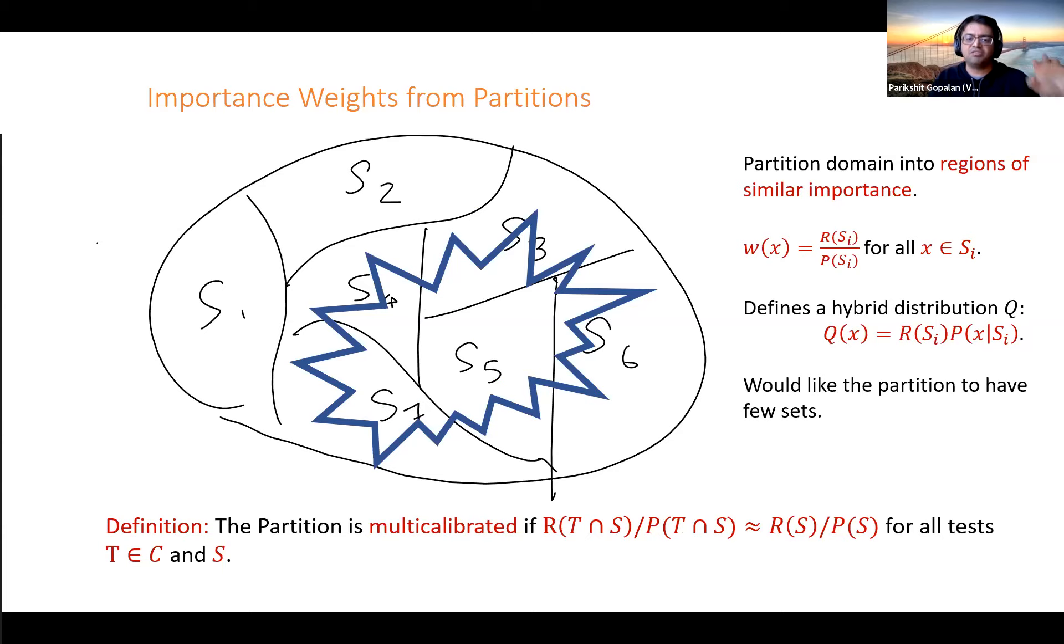A much stronger guarantee is this notion of multi-calibration. In multi-calibration, you take a test set that gets partitioned into different regions with different importance. An auditor comes by and asks, why did this portion of T get this importance weight? You can justify it by saying, if I gave these points an importance weight of 10, then all these points in T that have an importance weight of 10 are 10 times as likely under R as under P. So while I'm not sure point-wise, on average we've done the right thing, and we're able to say this simultaneously for every test and for every importance weight in our partition.